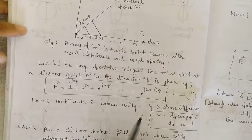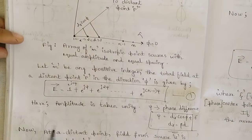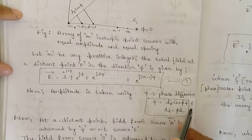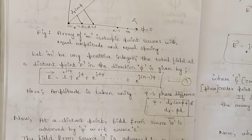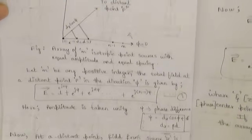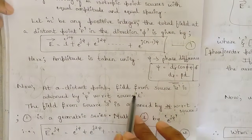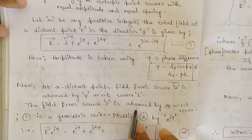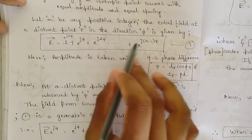The amplitude is taken as unity in every case, and the index increases by one each term. The angle ψ is the phase difference given by dr·cos(φ) plus an additional phase difference δ. For this case, that additional phase is not considered, and dr = βd. The field from source 2 is advanced by angle ψ with respect to source 1, the field from source 3 is advanced by 2ψ with respect to source 2, and so on for n sources. Equation 1 is a geometric series.